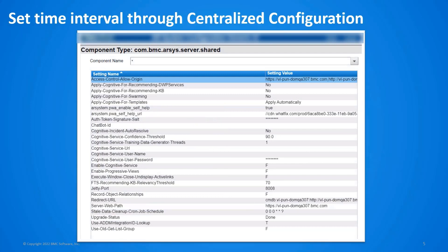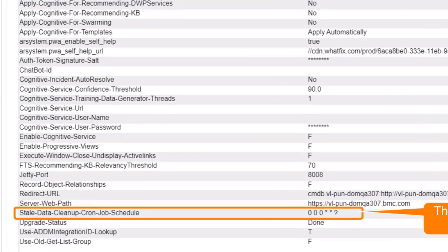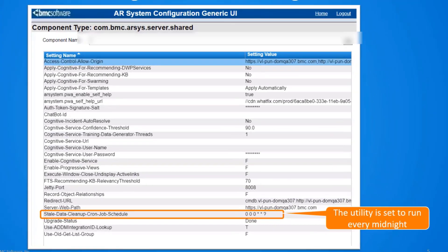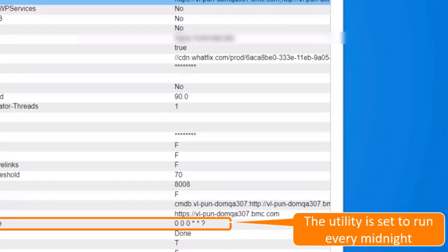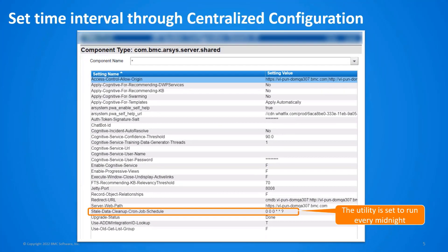Let us see how to use the centralized configuration to schedule the Data Cleanup Utility run. Use the stale data cleanup cron job schedule settings to schedule the utility run. Here, we are setting the utility to run every midnight.